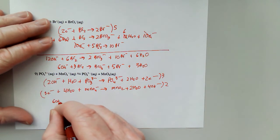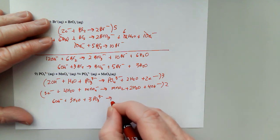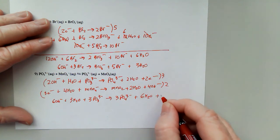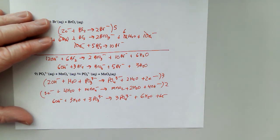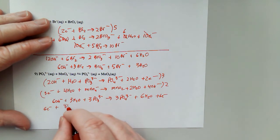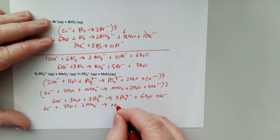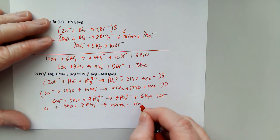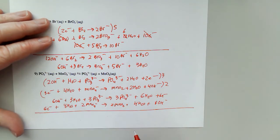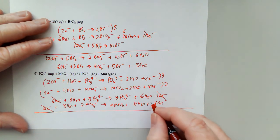So rewriting: six OH⁻ plus three H₂O plus three PO₃³⁻ gives me three PO₄³⁻, six H₂O, and six electrons. For the next one, two times three is six electrons plus eight waters plus two MnO₄⁻ to give me two MnO₂, four waters, and two times four is eight hydroxides. The six electrons cancel. Six and eight on the hydroxides will turn into two.